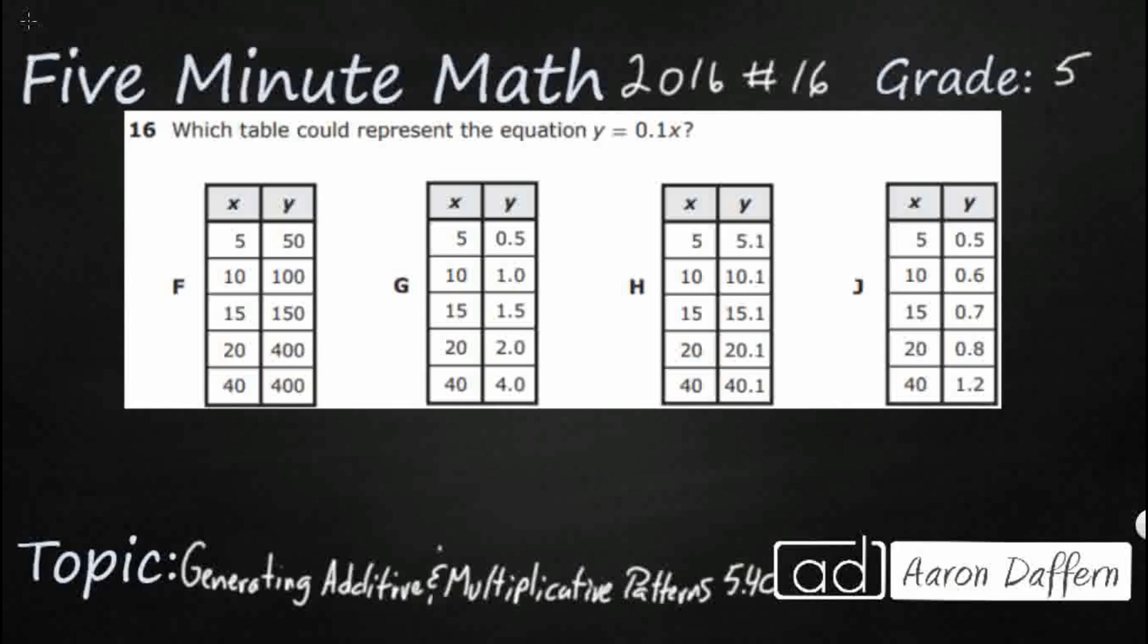So we have four different tables to choose from and we have a simple equation y equals 0.1x or 0.1 times x. So we need to figure out what this actually means here. We've got 0.1x and that x is actually an unknown, it's a variable.